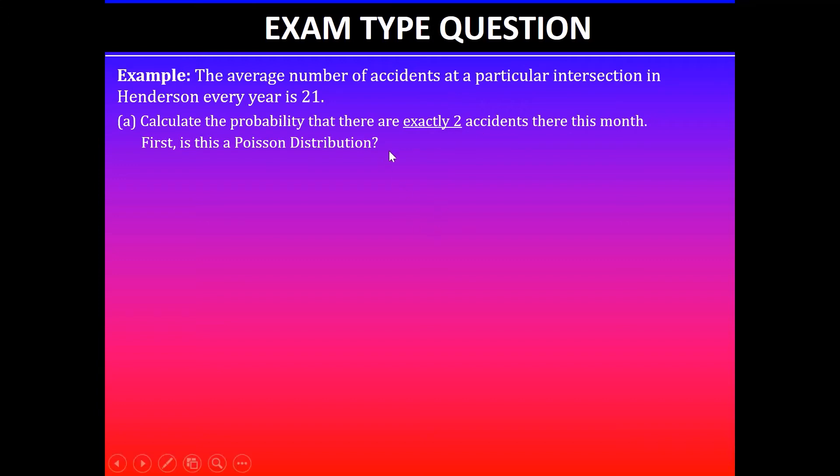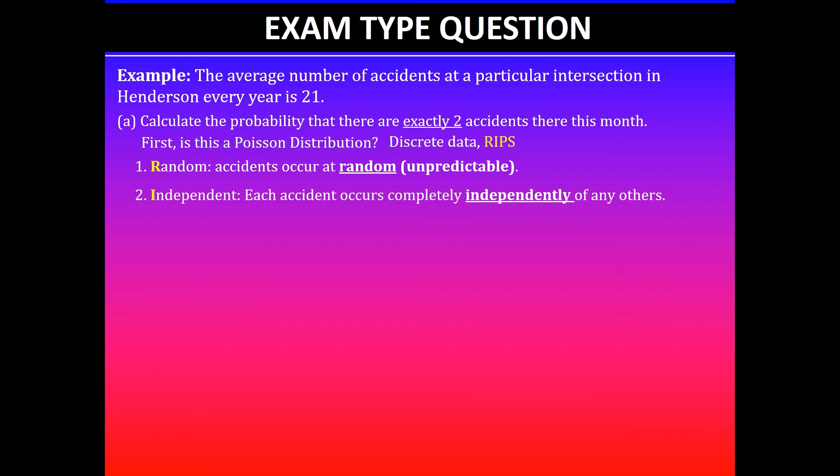In this case we are looking at accidents data and we know that we can count the number of accidents. The data is discrete. We'll see if it meets the four conditions in short: RIBS. We know that accidents occur at random and it's unpredictable, so it meets that condition. Second, each accident is completely independent.